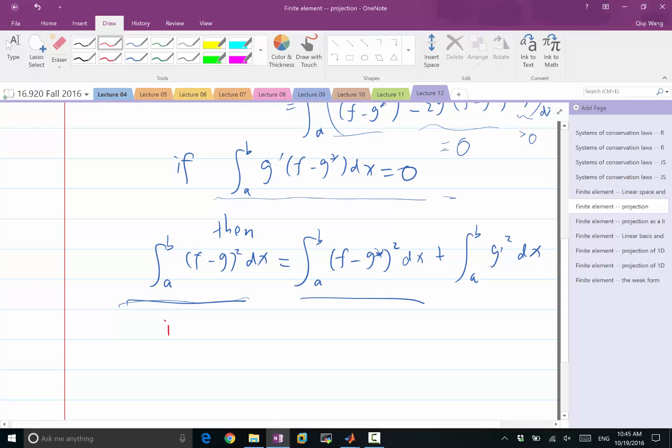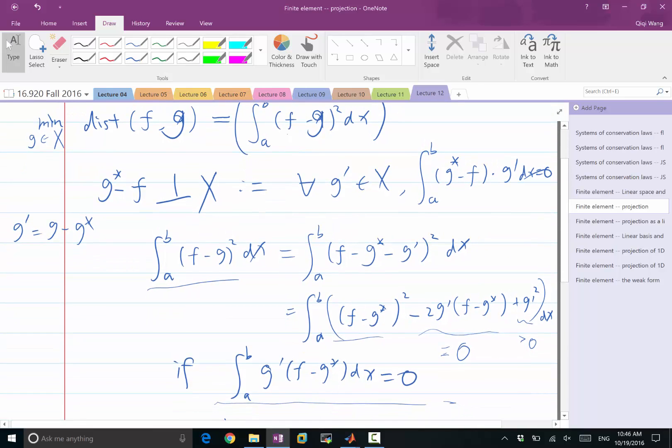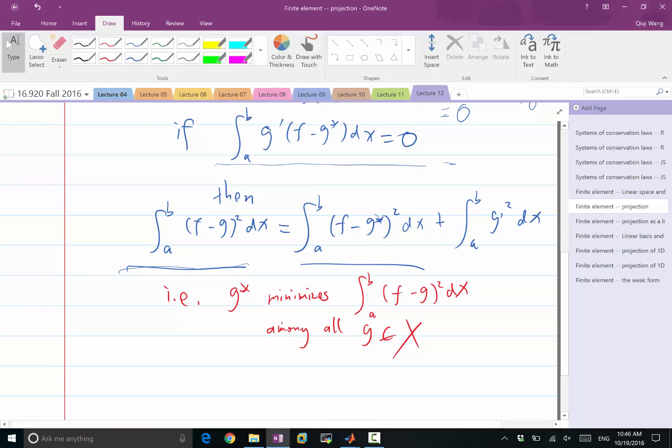So that means, if I can have this equal to 0 for any g prime in that linear space, then I know that g star is the minimizer of this distance function, distance square distance function. Let me write that down. Which is also saying that g star minimizes the squared distance function among all the g's in the linear space. So what I have done, I have transformed the optimization problem to an equality problem.